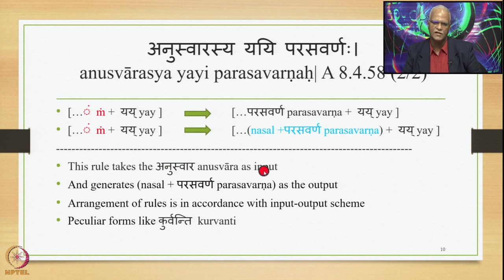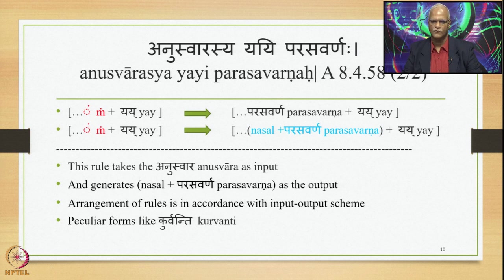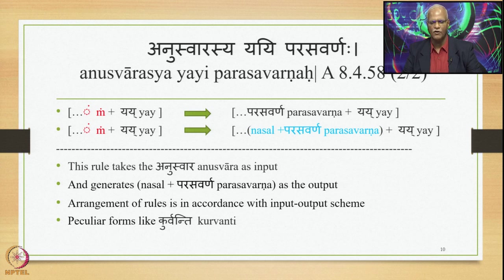Sutra 8.4.58 takes Anuswara as input and generates nasal Parasavarana as output. In the Asiddha section of the Ashtadhyayi, arrangement is by input-output scheme, meaning the output of 8.4.58 cannot become input for any previous sutra. Therefore, forms like Kurvanti are generated — the output of 8.4.58 is not visible to 8.4.1, so no retroflex occurs, and Kurvanti is correctly derived.